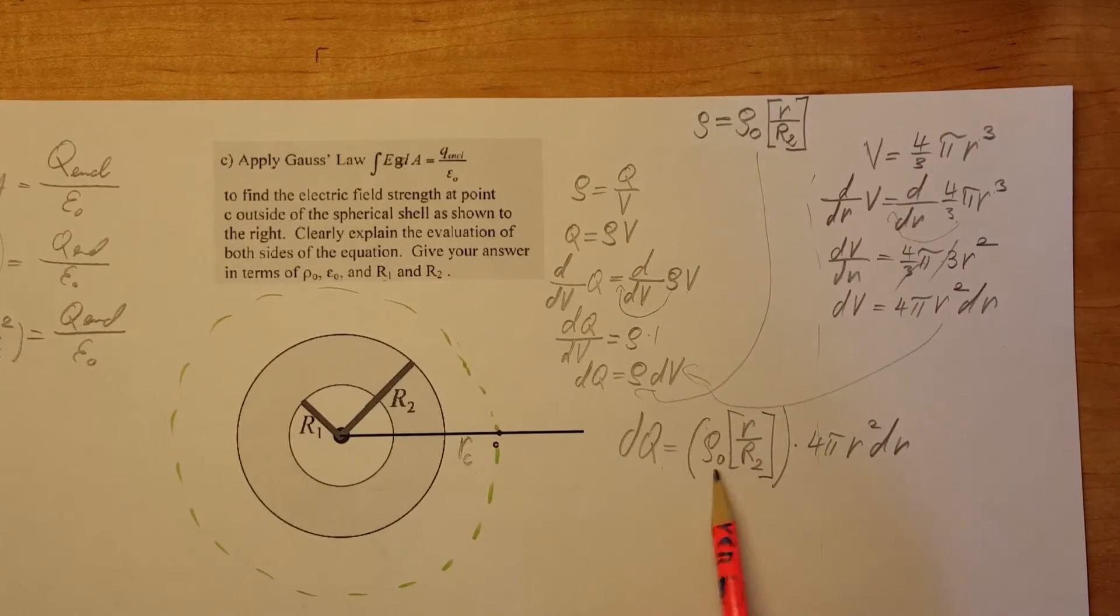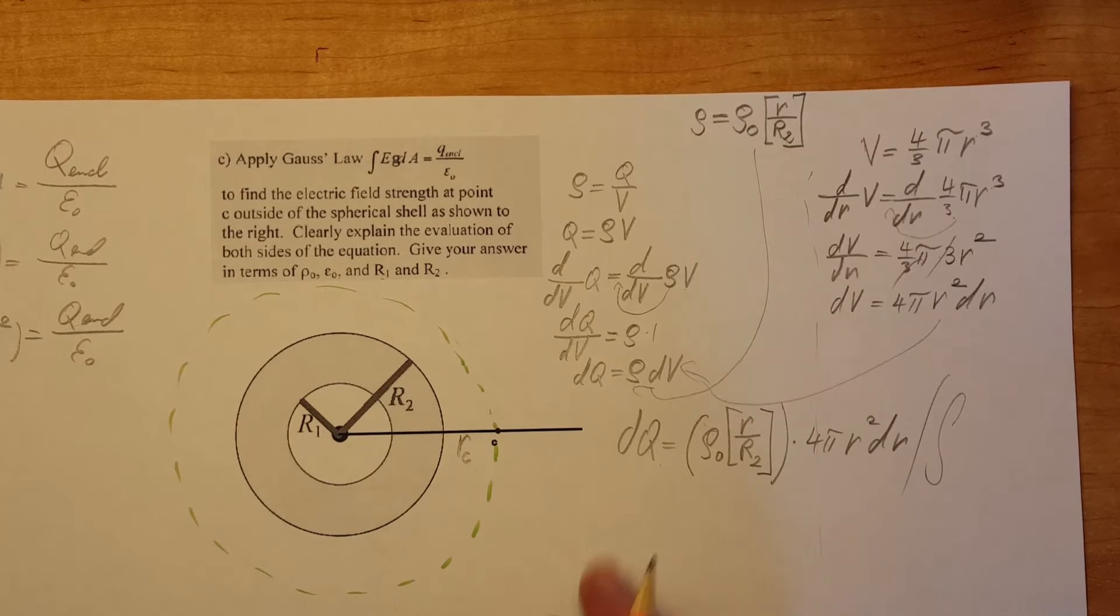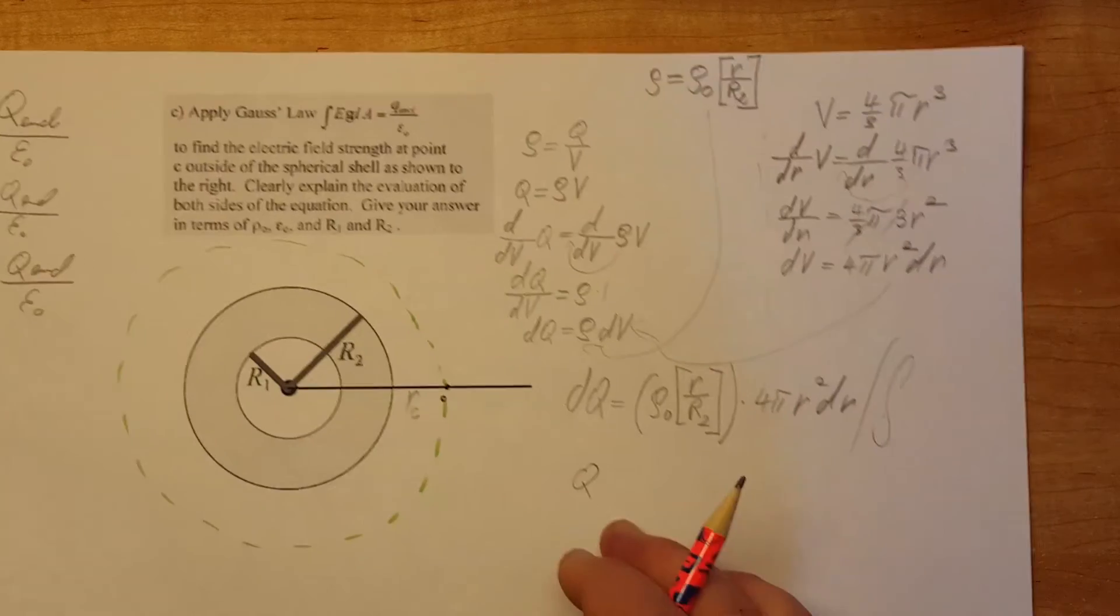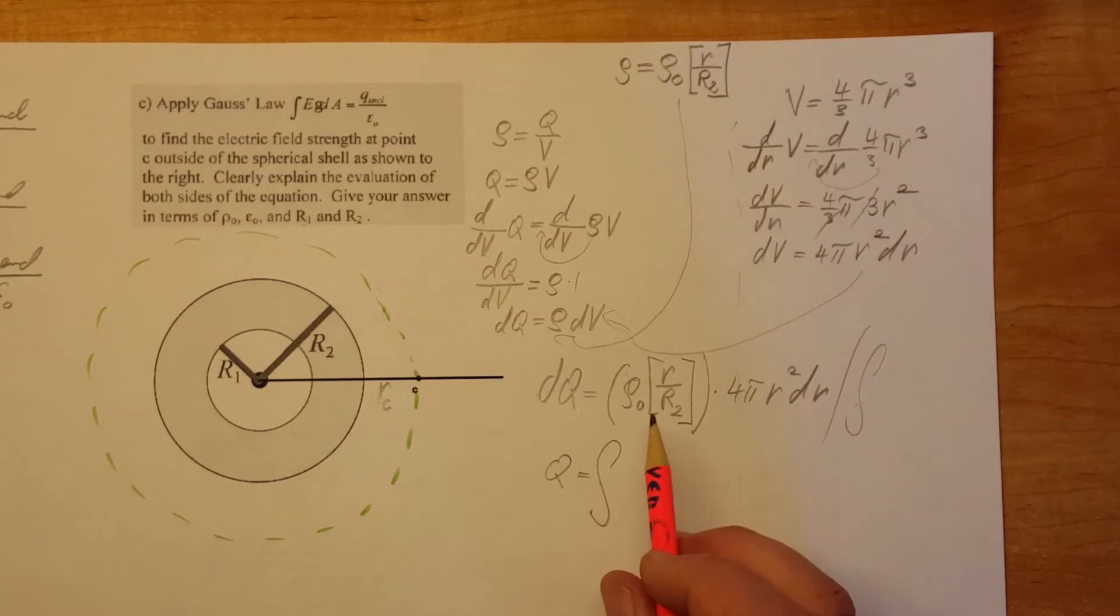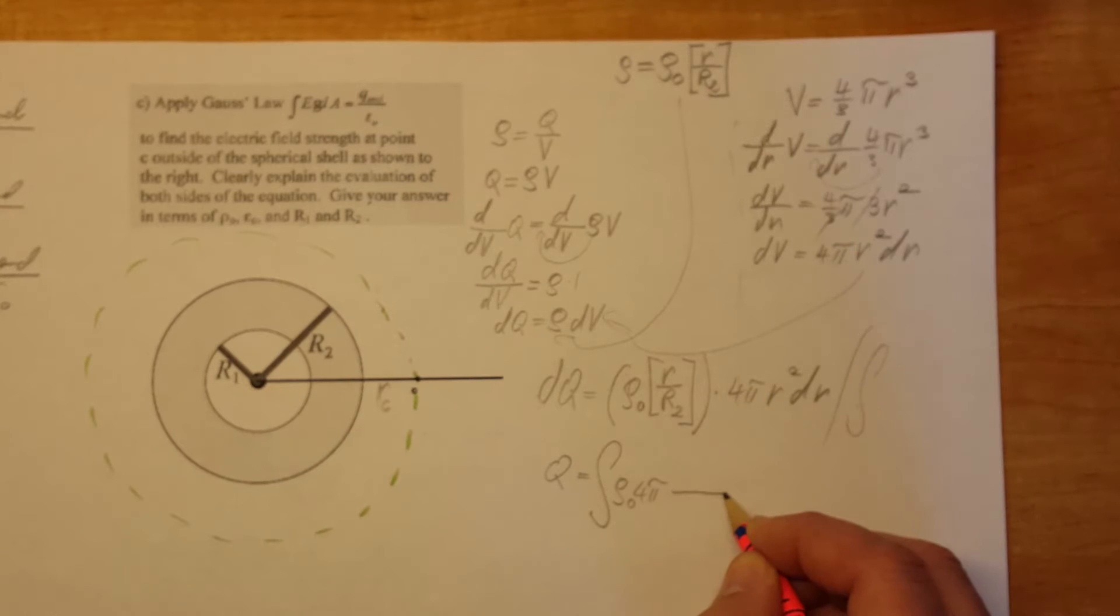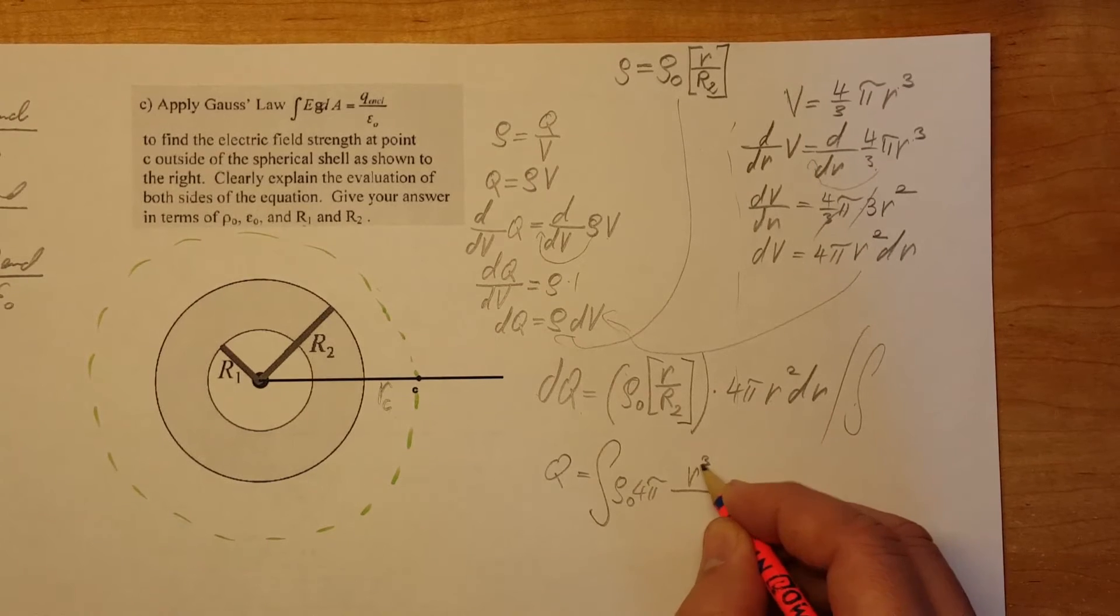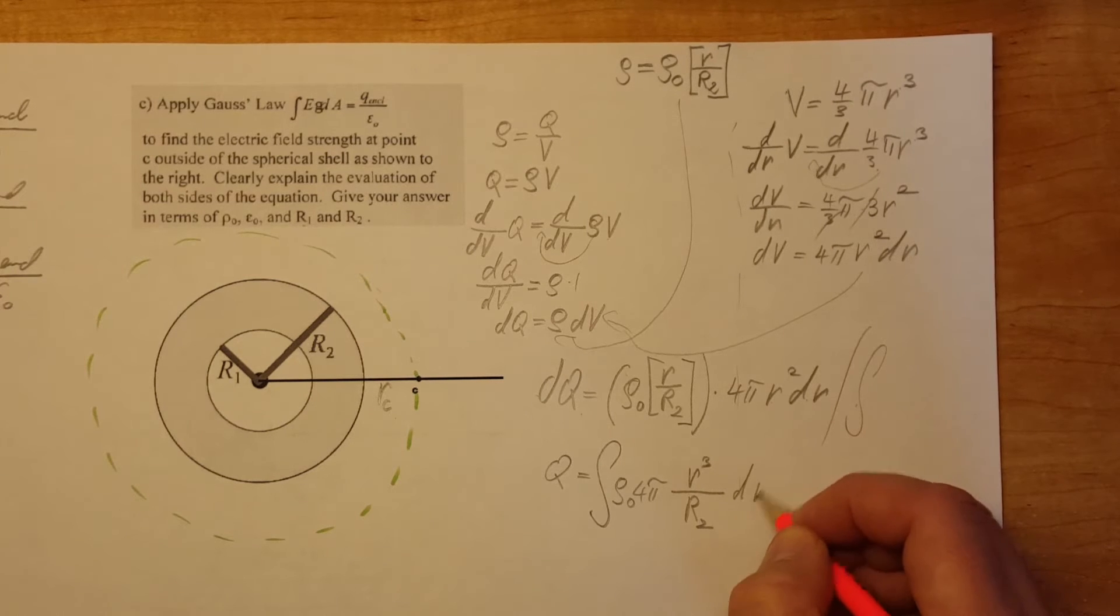As we see in our main formula that we are working for we have Q. Here we have dQ. So therefore we're going to take an integral of both sides of this equation. That way an integral of a derivative just cancel each other. So all we're going to have is Q, what we're going to be needing. We'll find the limits in a minute. Let's make this one look a little bit more presentable. So Rho 0, 4 pi. We're going to put R and R to the square together cubed over R2 and we have our dR.